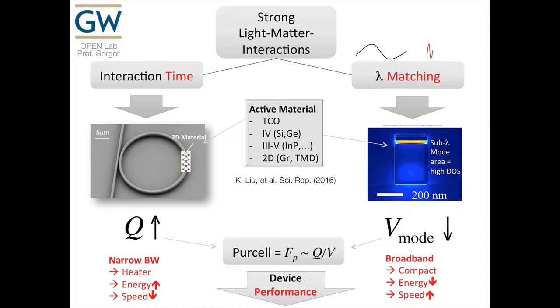However, Q-up has fundamental challenges: you have narrow bandwidth, you may need heaters, energy goes up, and speed possibly goes down because heaters can be slow. Your photon delay — the photon staying long inside the cavity — also fundamentally limits remodulation. On the other hand, the mode volume approach has essentially no cavity, so it can be broadband. These types of devices can be very compact — we're talking a few microns. The RC delay is short, meaning the device is fast and energy can be below one femtojoule per bit from the device alone.